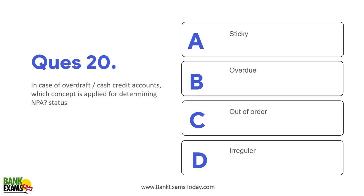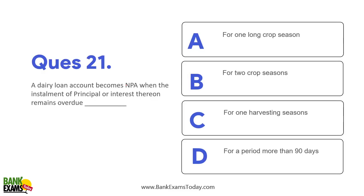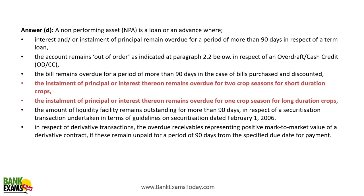In case of an overdraft or cash credit account, the out-of-order concept is applied, not NPA. A dairy loan account is not an agriculture account — the regular 90-day business concept applies. In case of agriculture, if the installment of principal or interest remains overdue for two crop seasons for short-duration crops, or one crop duration for long-duration crops, then it becomes NPA.